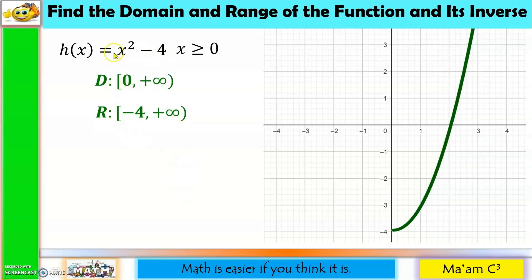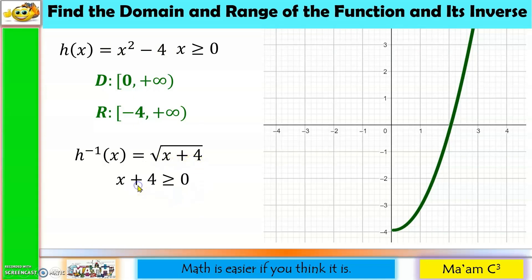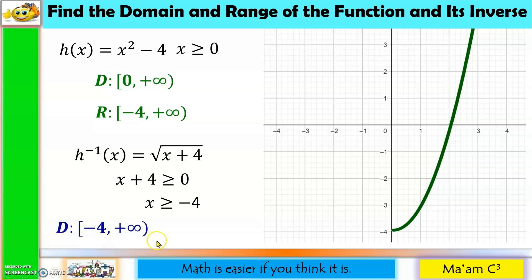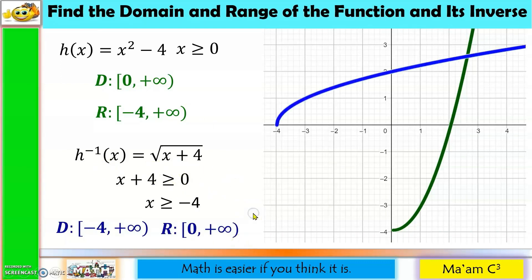The inverse of x² − 4 (with restricted domain) is √(x + 4), a radical function. Setting the radicand ≥ 0 gives x ≥ −4, so the domain of the inverse is [−4, +∞). The range of the inverse is the domain of the original function, which is [0, +∞). Drawing y = x confirms the graphs are reflections of each other.